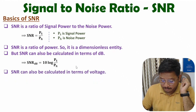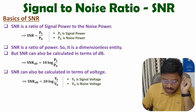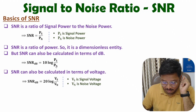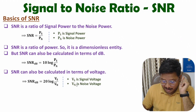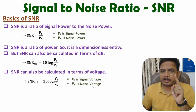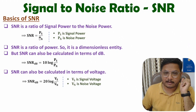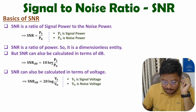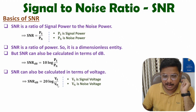Sometimes we may calculate SNR in terms of voltage. Since power is proportional to voltage squared, if you place VS squared instead of PS and VN squared instead of PN, the power of 2 comes to the front. So SNR in terms of dB will be 20 log of VS by VN, where VS is signal voltage and VN is noise voltage. In summary: in terms of value it is PS by PN; in terms of dB it is 10 log of PS by PN; and in terms of voltage it is 20 log of VS by VN.